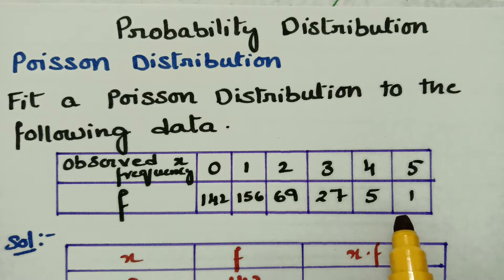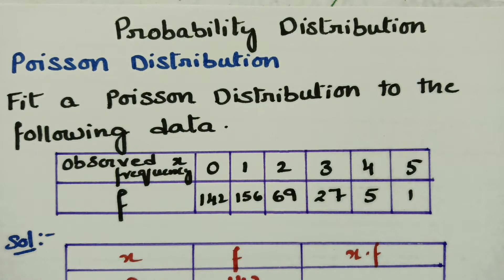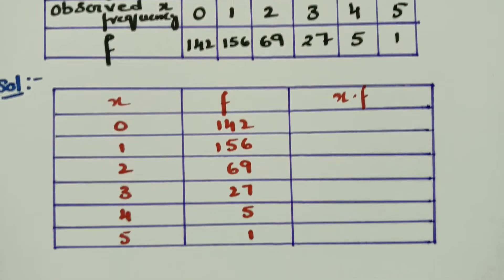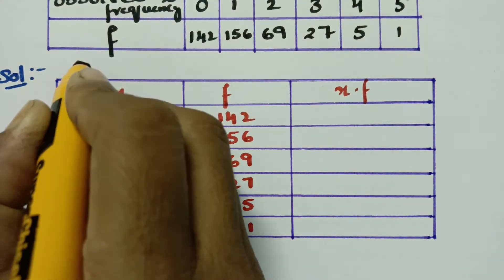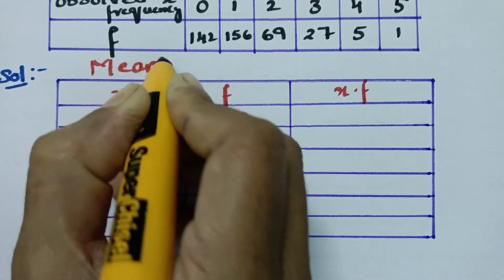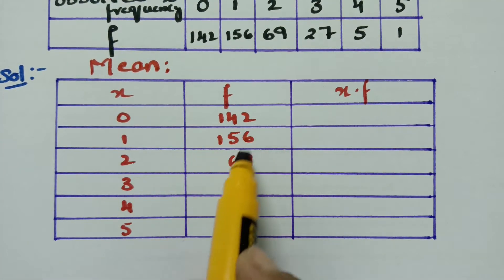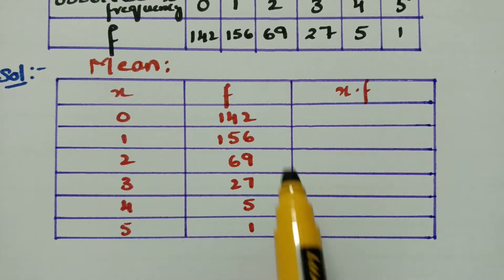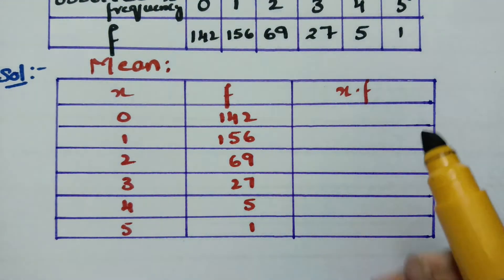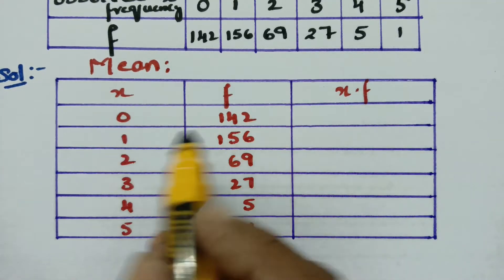Now we have to find the Poisson distribution. For that, first of all we need the mean. Here is the table for finding the mean. The frequencies f are given as 142, 156, 69, 27, 5, and 1 from this table. Now we have to multiply x into f, that is x into the frequency.